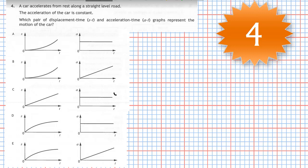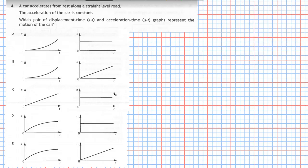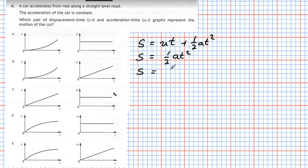Question four from section one of the 2019 Higher Physics examination. A car accelerates from rest along a straight level road with constant acceleration. The displacement equation is s = ut + one half at². Since the car starts from rest, u equals zero, so s = one half at². With acceleration and one half both constant, s = kt² for some constant k.